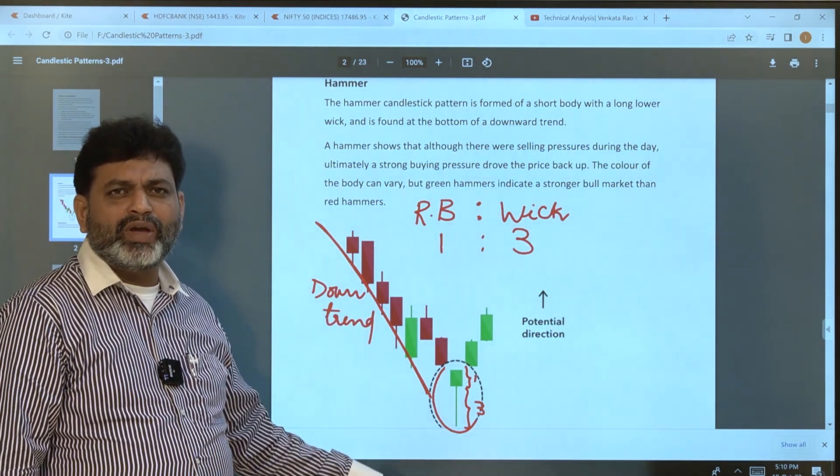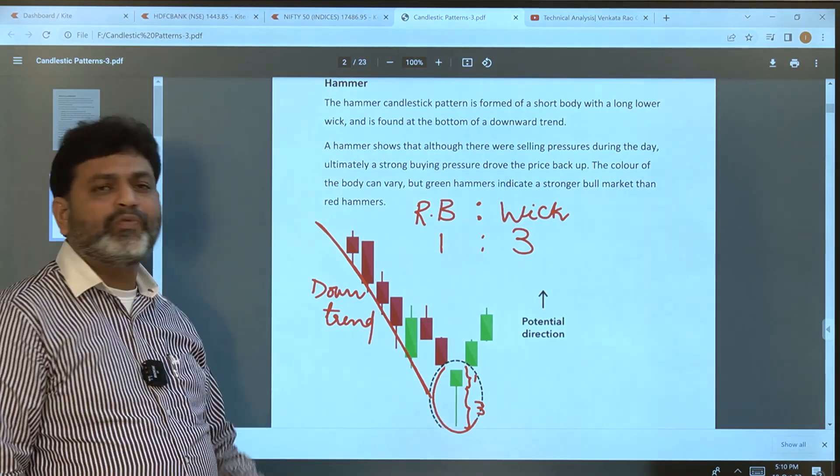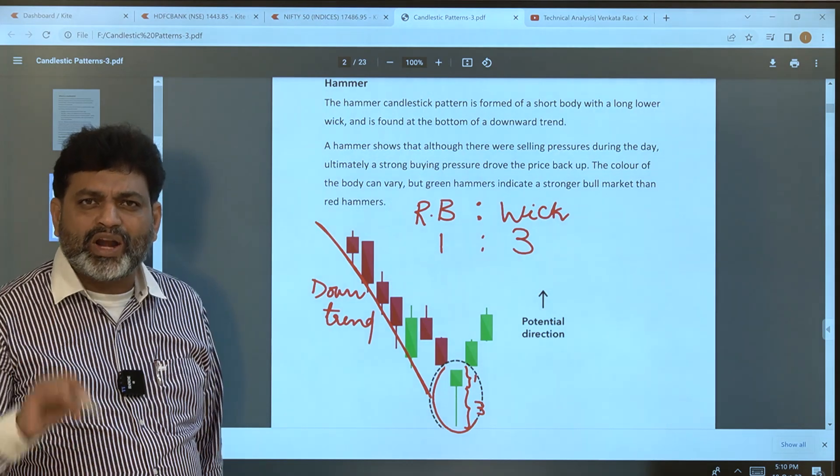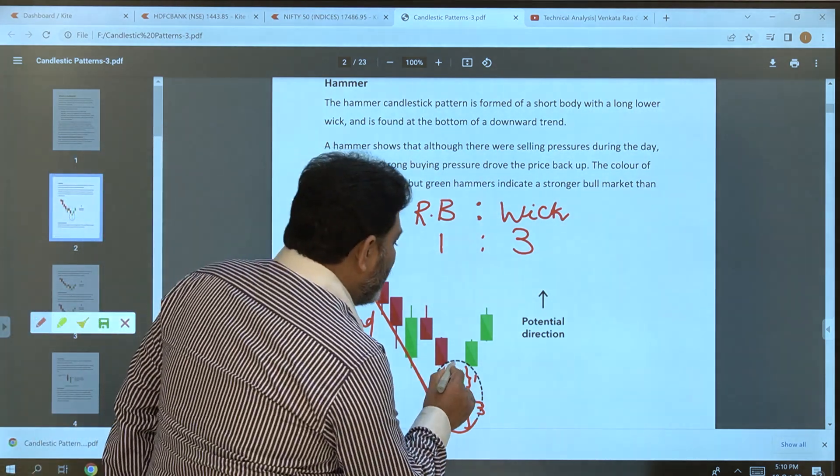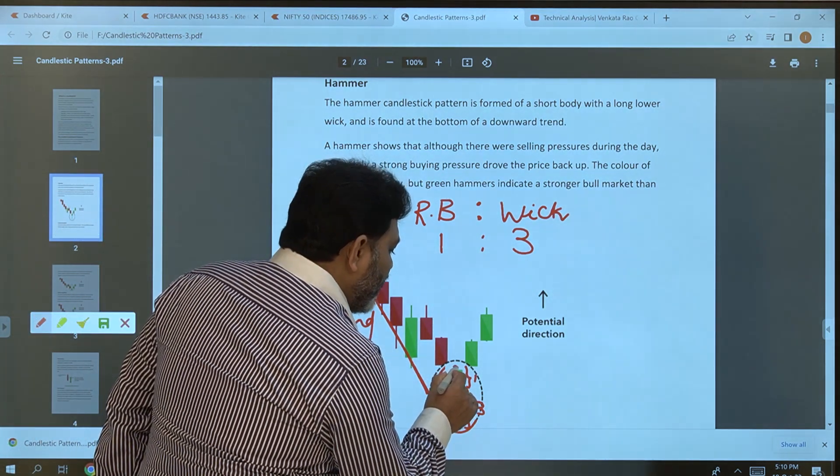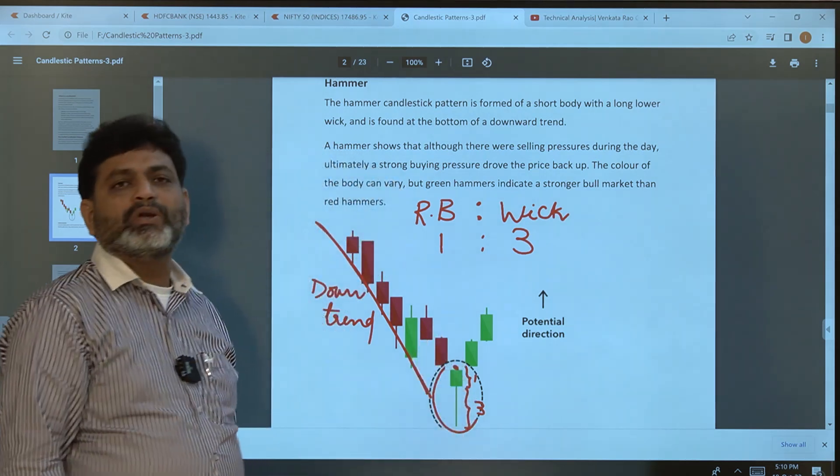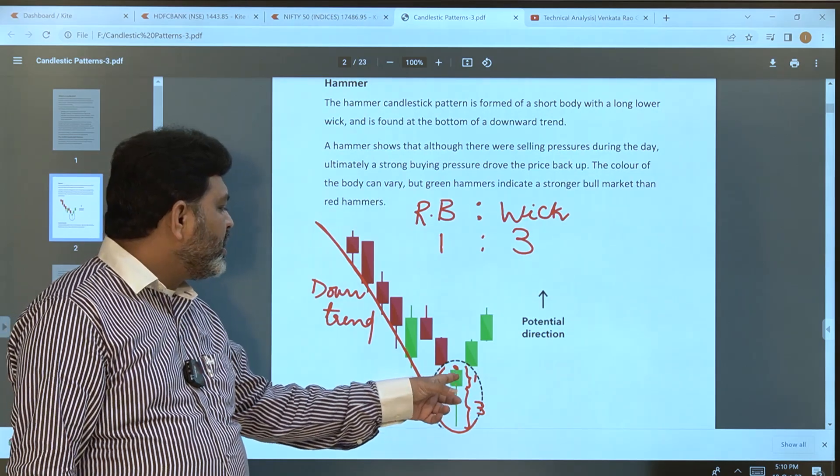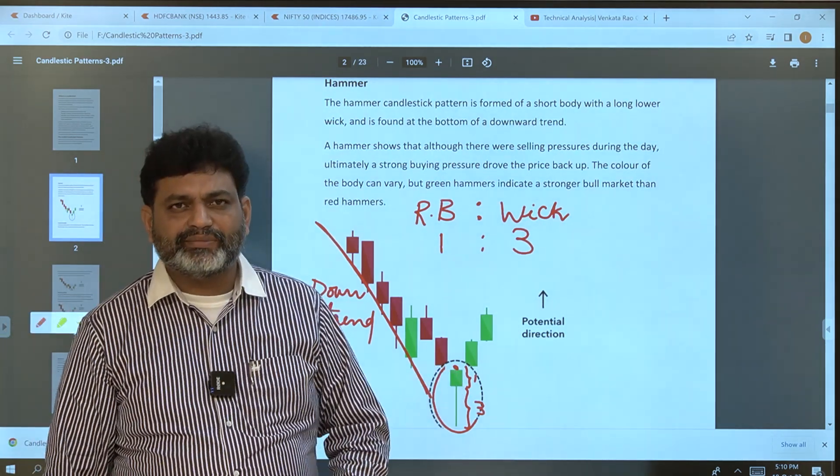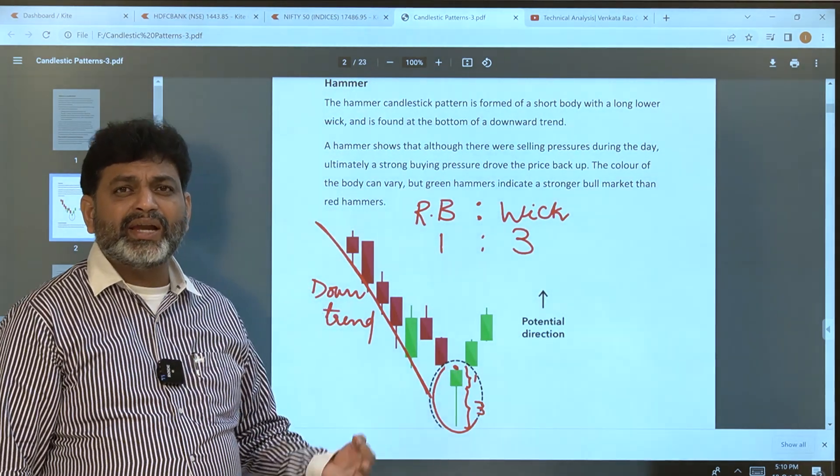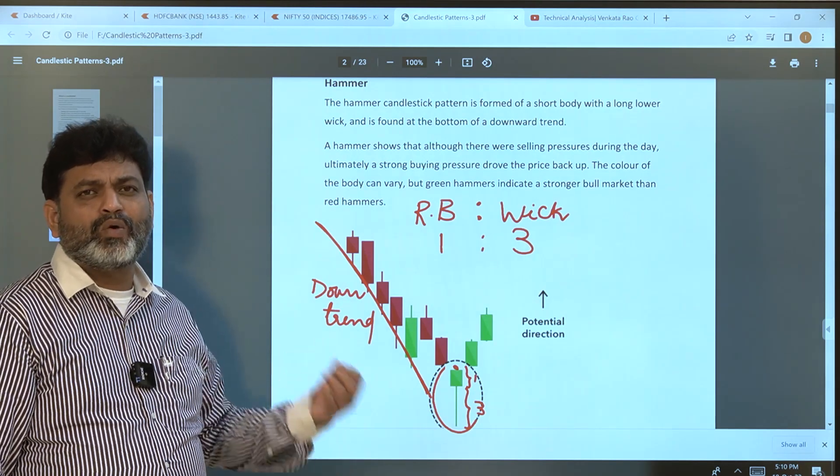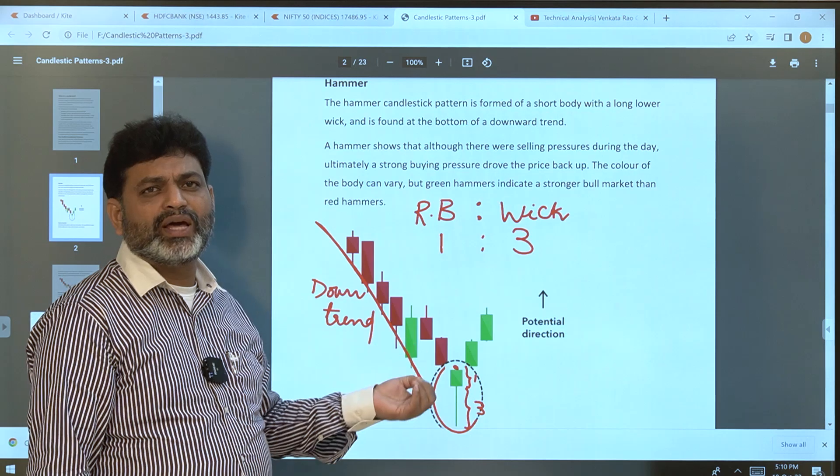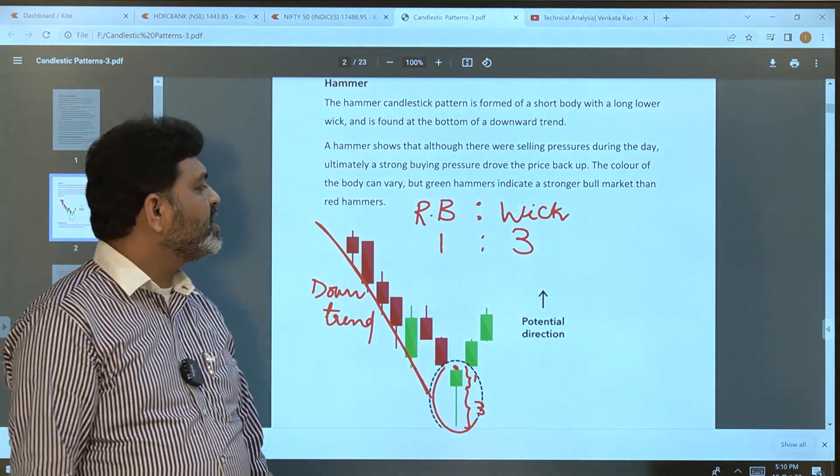The real body is one time, the bottom wick is three times, but there's no top wick requirement. The top wick is not compulsory. It can be negligible - negligible means very small compared to the real body. It can be absent or present, but if present, it should be much smaller in size compared to the real body.